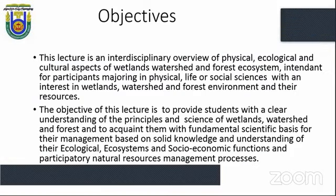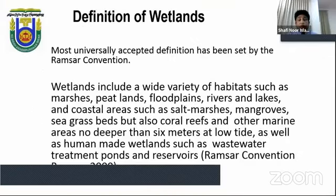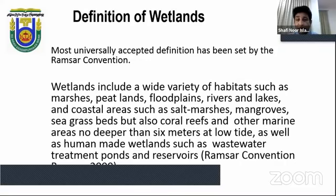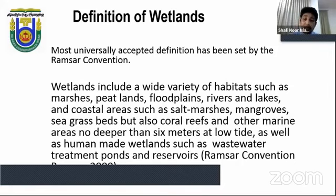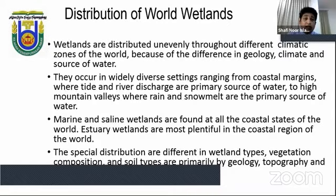The most universally accepted definition of wetlands has been set by the Ramsar Convention. Wetlands include a wide variety of habitats such as marshes, peatlands, floodplains, rivers and lakes, and coastal areas such as salt marshes, mangroves, seagrass beds, coral reefs and other marine areas no deeper than six meters at low tide, as well as human-made wetlands such as wastewater treatment ponds and reservoirs. This general definition is accepted and used all over the world.